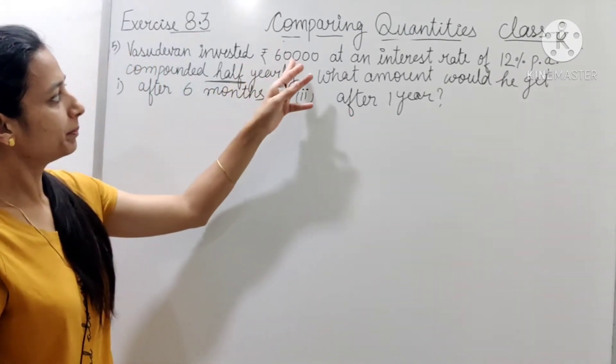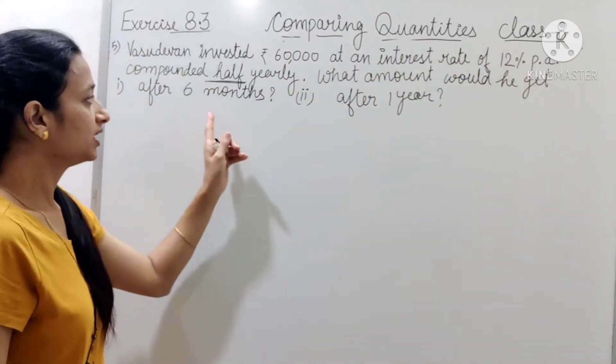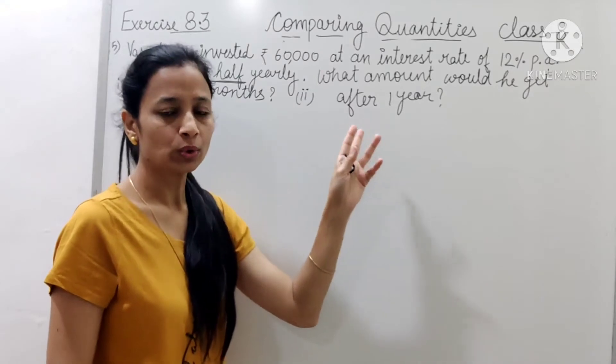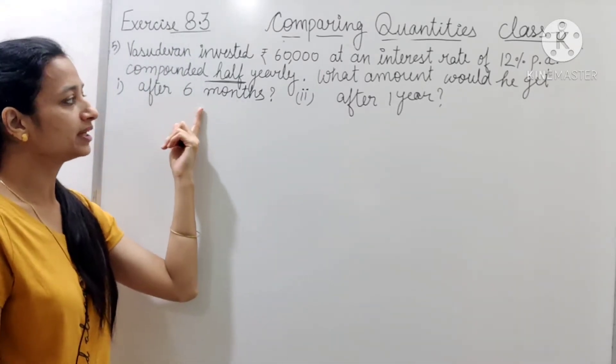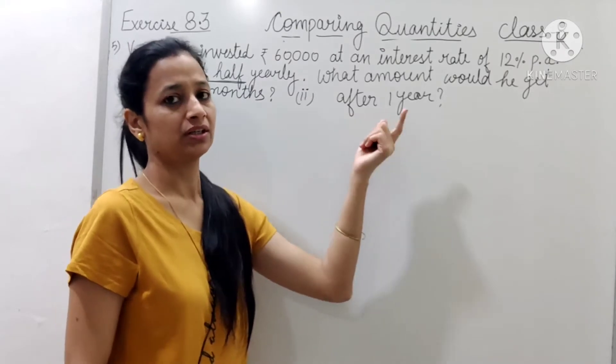So principle given hai, rate of interest given hai, time hume usne 2 diya hai. First time me keha raha hai 6 month me nikal raha hai, or second time keha raha hai after 1 year.